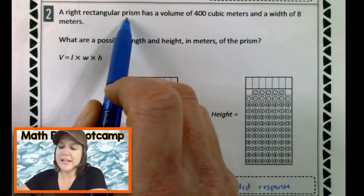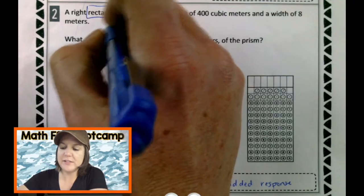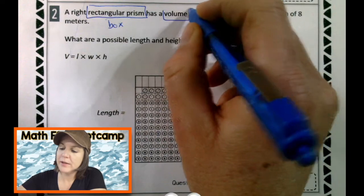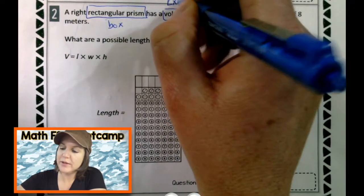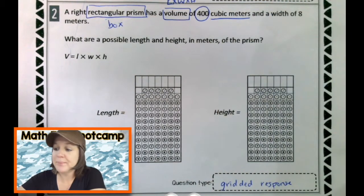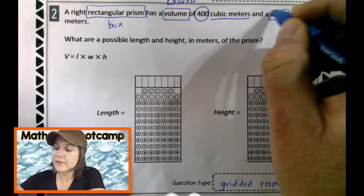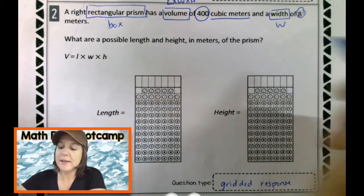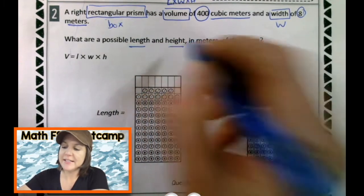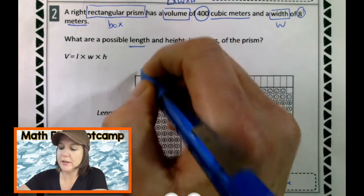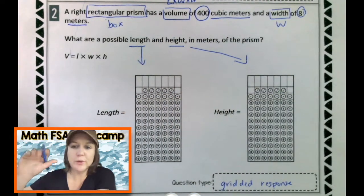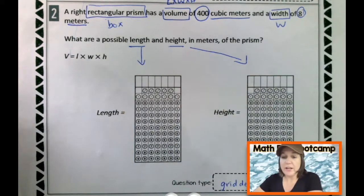Gridded response. We've got two gridded responses. Ooh la la. And now let's go ahead and read the problem. A right rectangular prism. We'll draw that shape. That is basically a fancy word for a box. Has a volume. Volume is length times width times height of 400 cubic meters. And a width, w, of 8 meters. What are the possible length and height in meters of the prism? So we're going to put our length here and our height there.